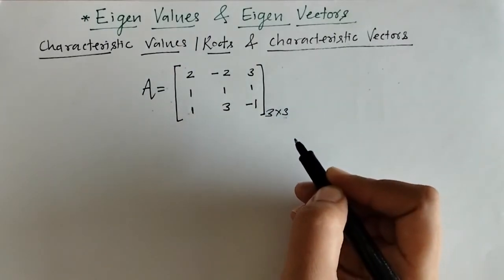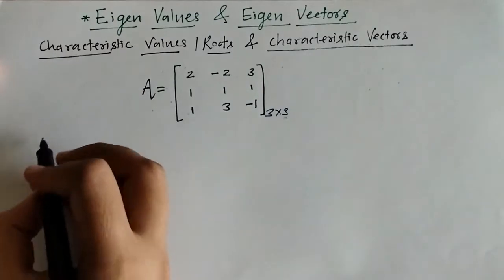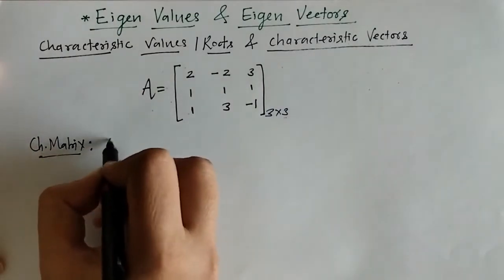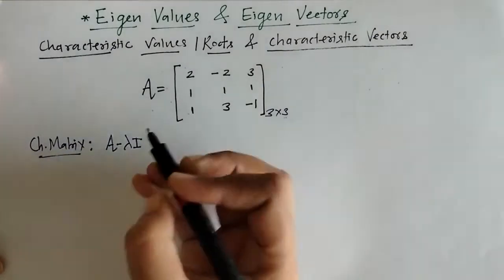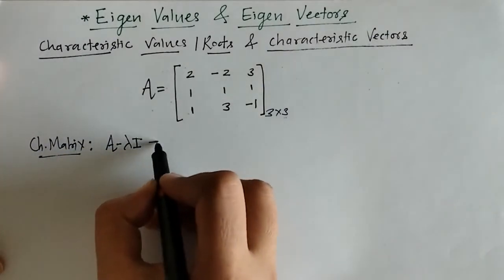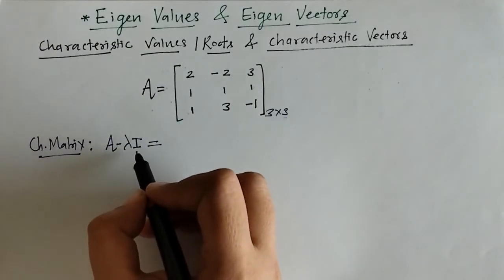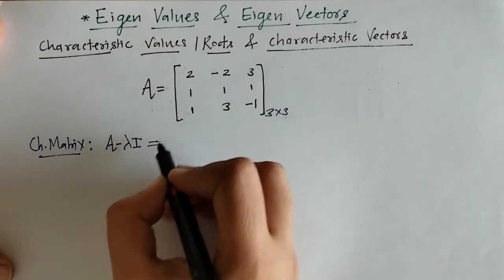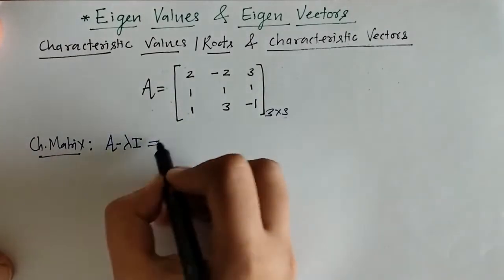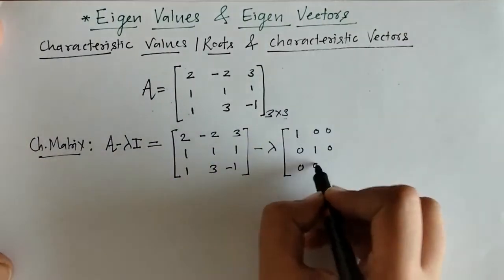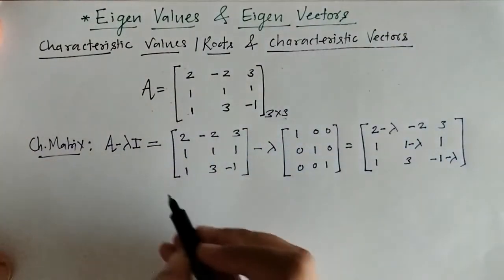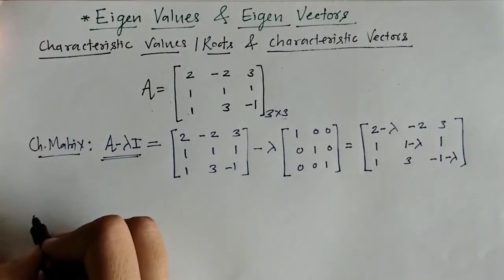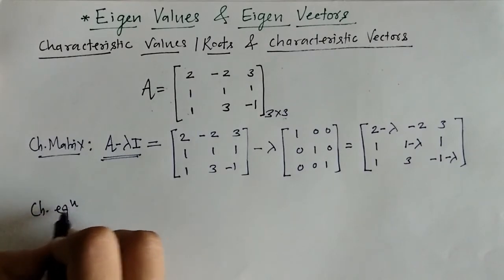For finding characteristic values, we should first know the characteristic matrix, which is given by the matrix A minus lambda I, where A is the given matrix, lambda is a scalar, and I is the identity matrix of the same order. Here we will write down this matrix A minus lambda I.